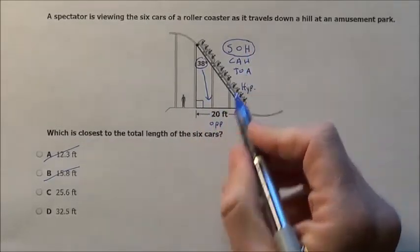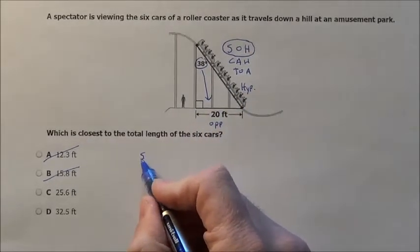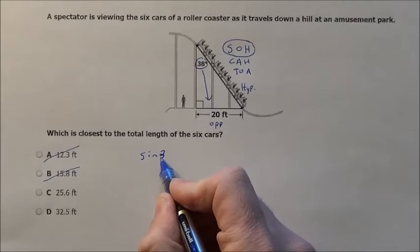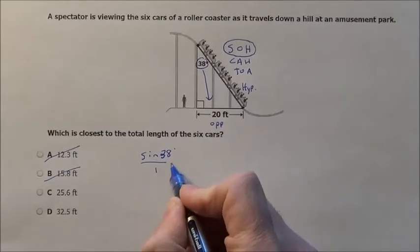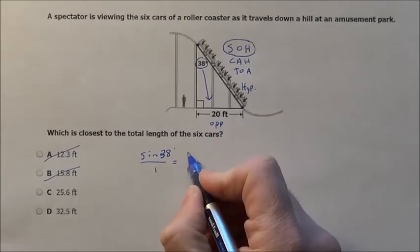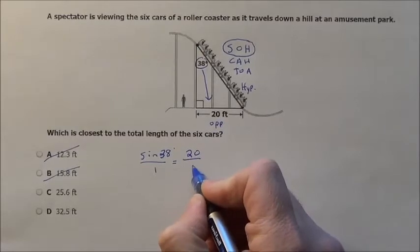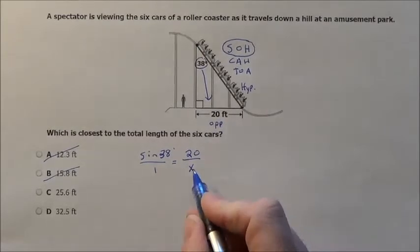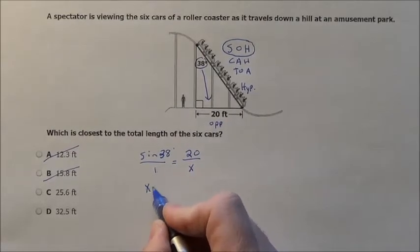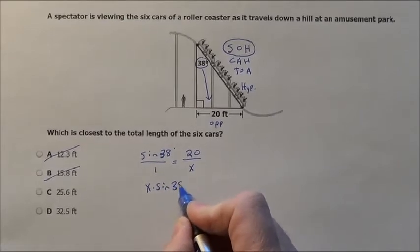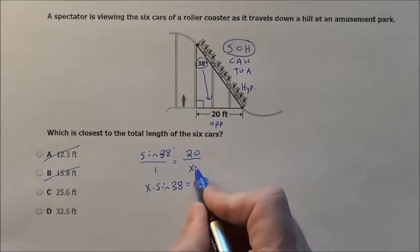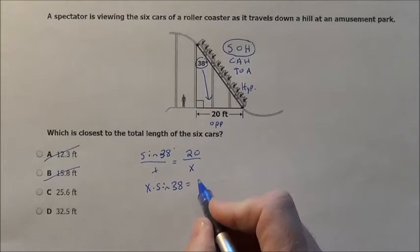Now to do this, we simply are going to use the sine. So we have sine of 38 degrees over 1 equals the opposite measurement, 20, over the hypotenuse, which we'll label x. Now we have x times sine of 38 equals 20 times 1. We're just cross multiplying. These multiplied equal those multiplied.